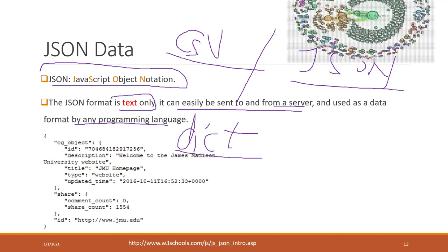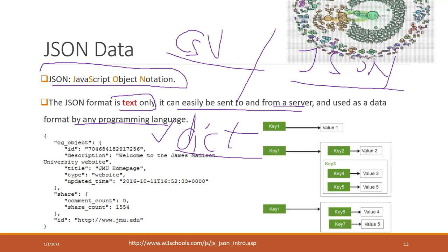If you remember from the Python class, when you load JSON data into Python, you treat that JSON data as a dictionary. The format is key-value pairs. The value can be a number, a string, another nested document, or another nested set of key-value pairs, and also can be a list. Everything is inside curly brackets.